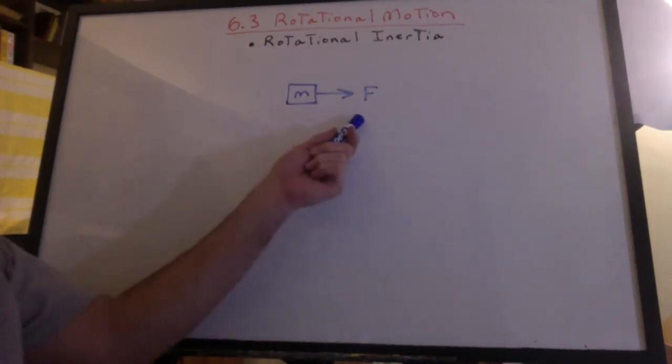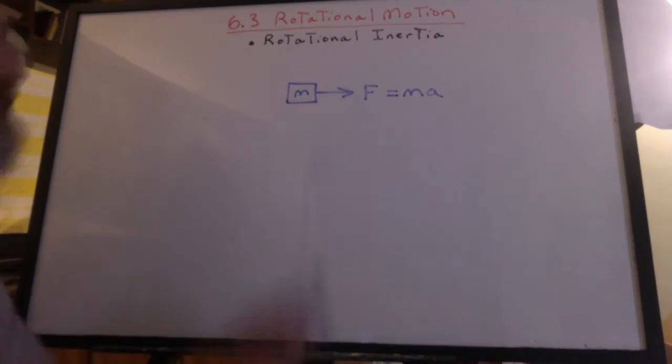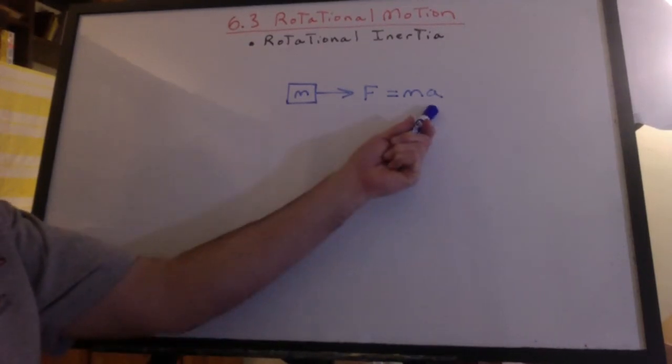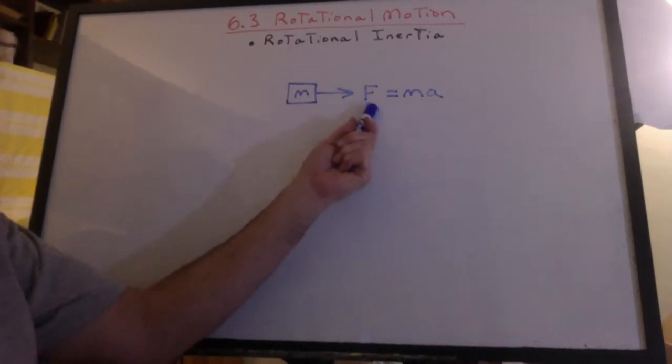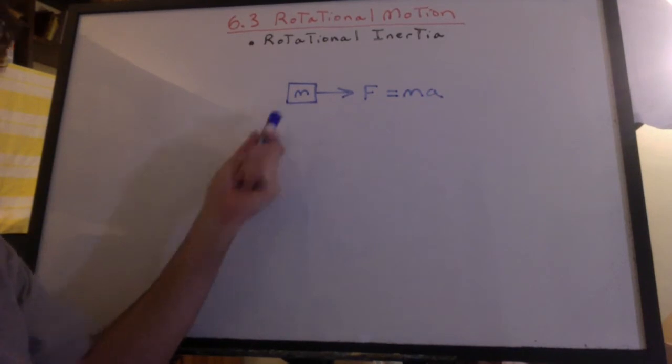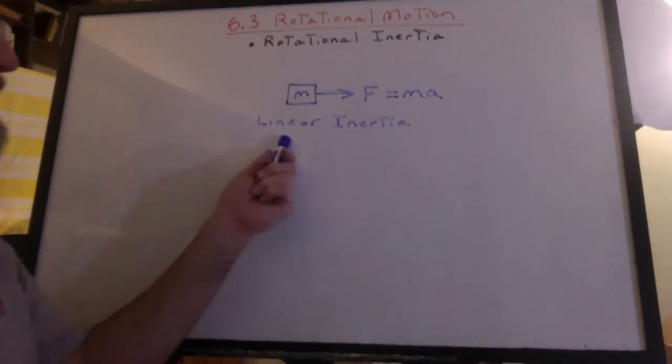We'll start with a mass and a force. It's going to cause an acceleration. The bigger the mass, the less the acceleration for a constant force. Well, that's the inertia. Think of it as the linear inertia.